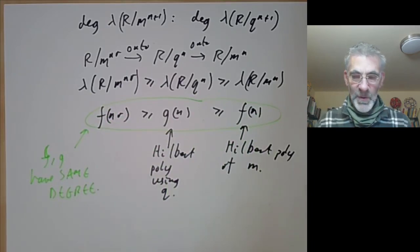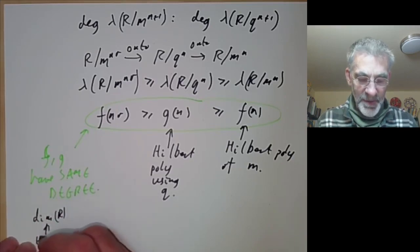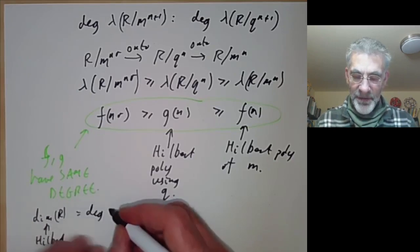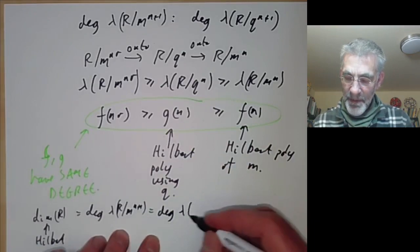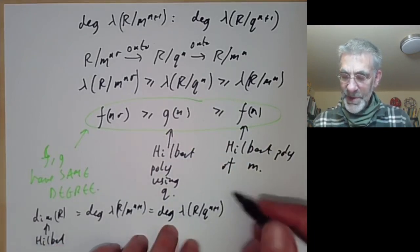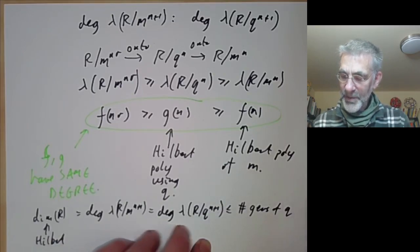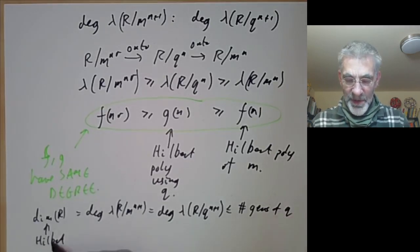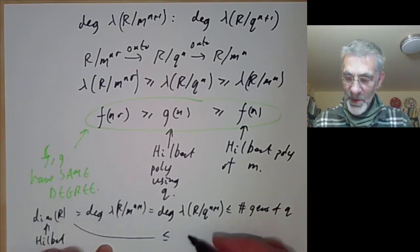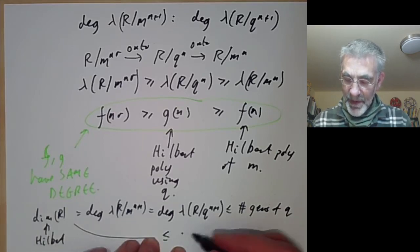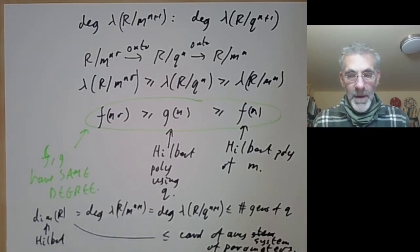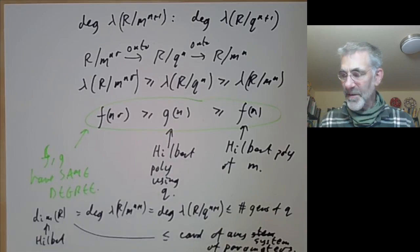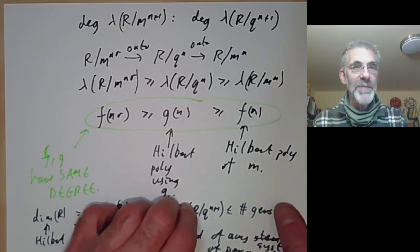This proves our first inequality: the dimension of R using the Hilbert polynomial equals the degree of the length of R over M to the n plus 1, which by this inequality equals the degree of the length of R over q to the n plus 1, which we showed is less than or equal to the number of generators of q for any q. So the Hilbert dimension is less than or equal to the cardinality of any system of parameters. That's the proof of the inequality for this lecture, and the next couple of lectures will prove the other two inequalities mentioned at the beginning.